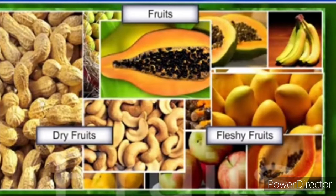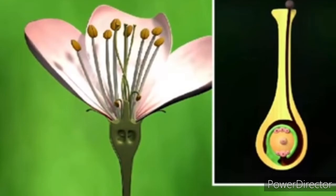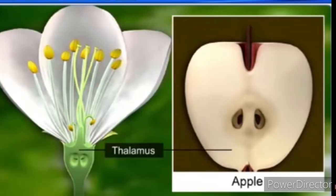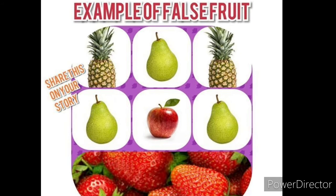Many fruits have evolved mechanisms for dispersal of seeds. In most plants, by the time the fruit develops from the ovary, the other floral parts such as sepals and pistil degenerate and fall off. In a few species such as apple, strawberry, and cashew nut, the thalamus also develops to form the fruit. Such fruits are called false fruits. Fruits developed from the ovary alone are called true fruits.